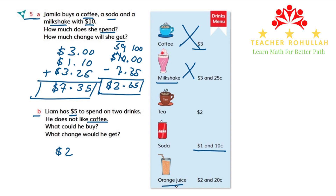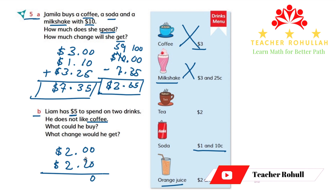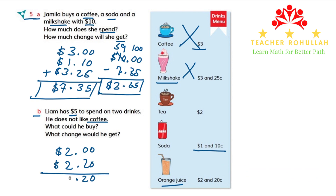If he buys orange juice, the amount will not exceed $5. The price of orange juice is $2.20. To easily add, I give a decimal point and two placeholder zeros to $2.00. Zero plus zero is zero, zero plus two is two, bring down the decimal point, two plus two is four. So the amount that he spends is $4.20 if he buys orange juice and tea.